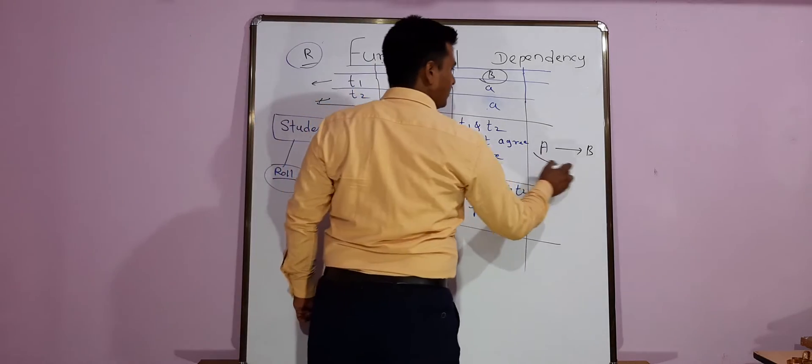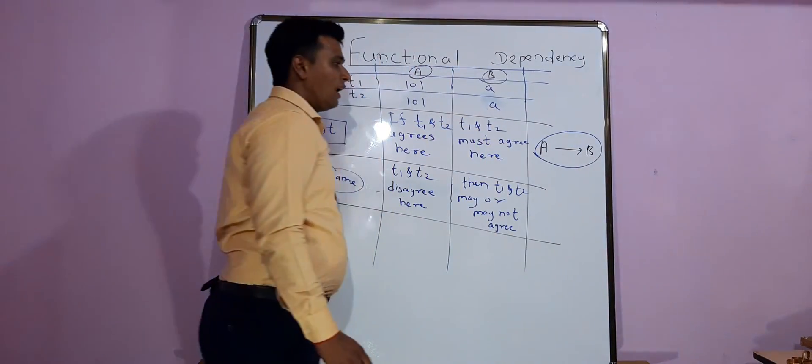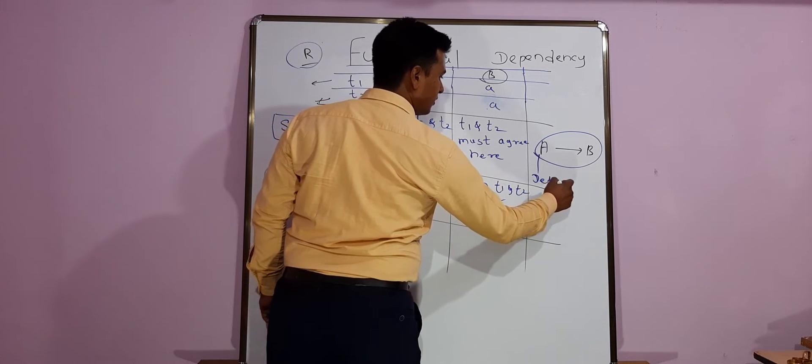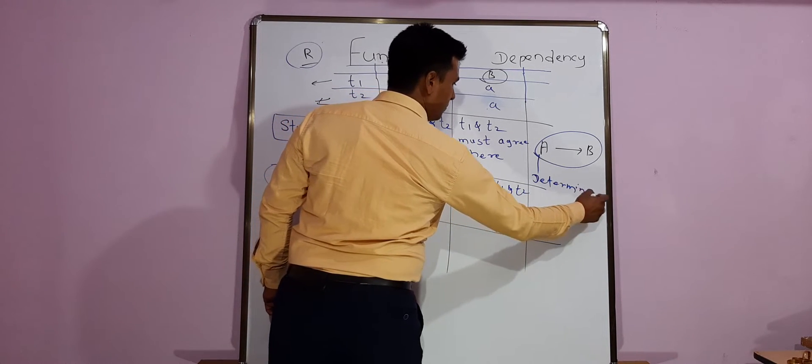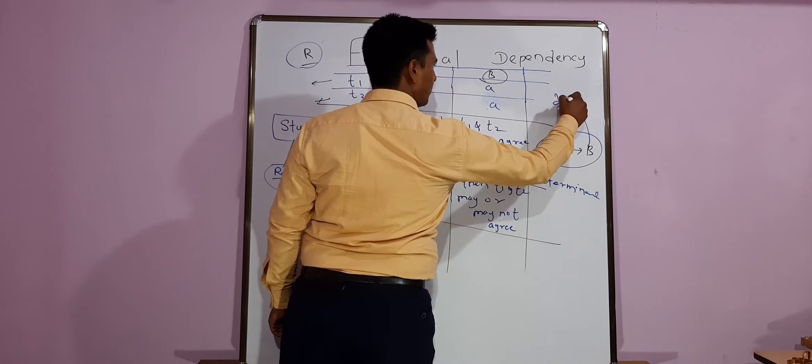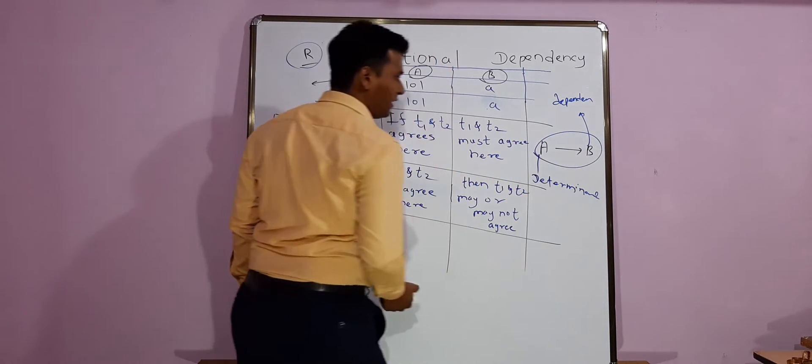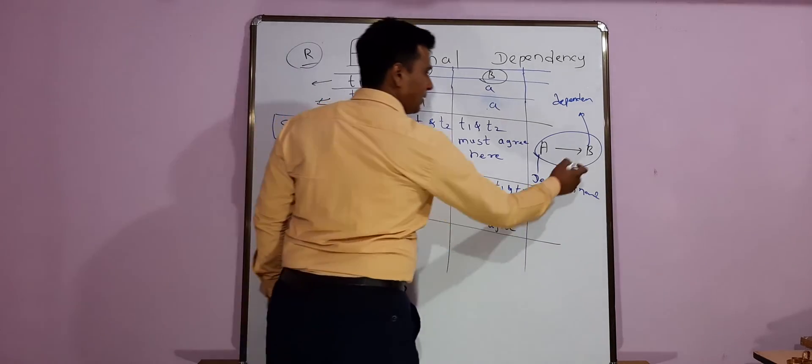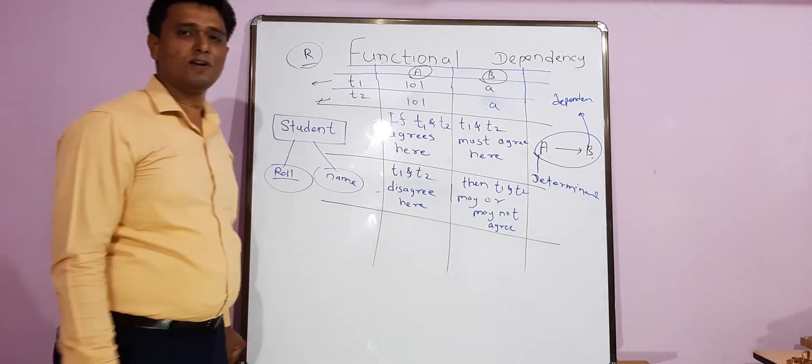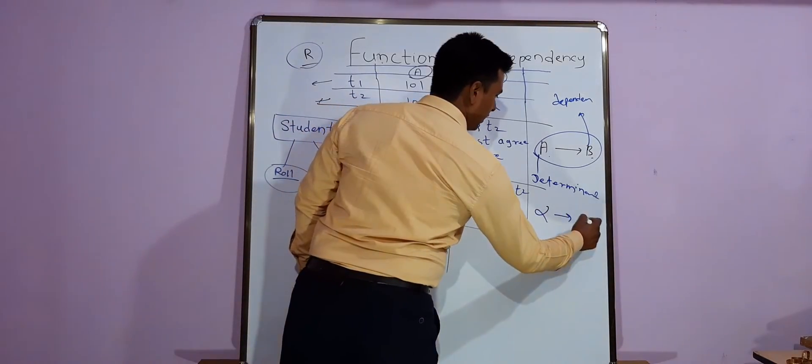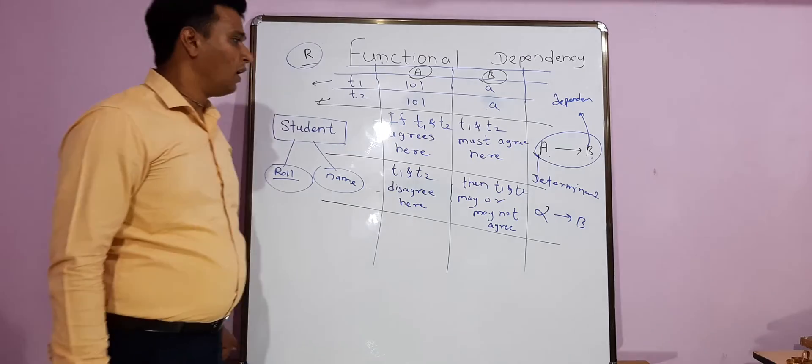Basing on that, what is functional dependency? Understand here, this is read as A determines B. So here A is called as determinant as well as B is called as dependent. So you can read like this: A determines B, or you can say B is dependent on A. That is called as functional dependency. You can represent in alpha and beta format, we can represent in different ways, no problem.